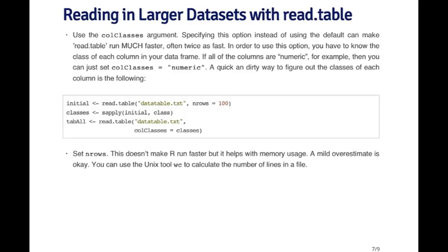Otherwise, what you can do, if you have a huge dataset, you can read in maybe the first hundred or the first thousand rows by specifying the nrows argument. And then looping over each of the columns using sapply and calling the class function. The class function will tell you what class of data is in each column. Then you can store this information and then read the entire dataset after by specifying the colclasses argument.